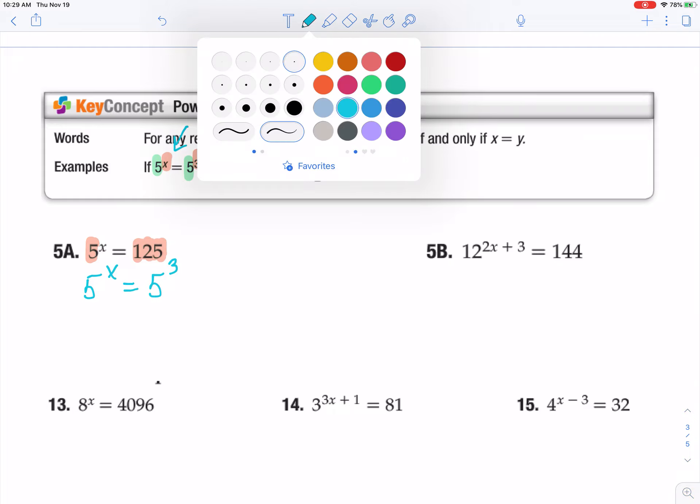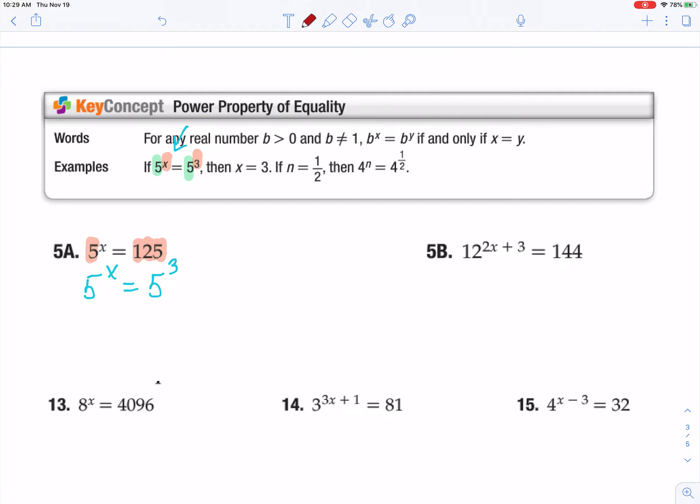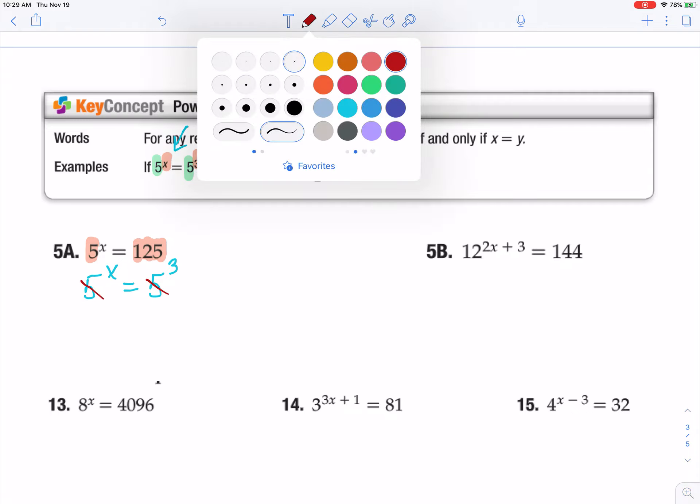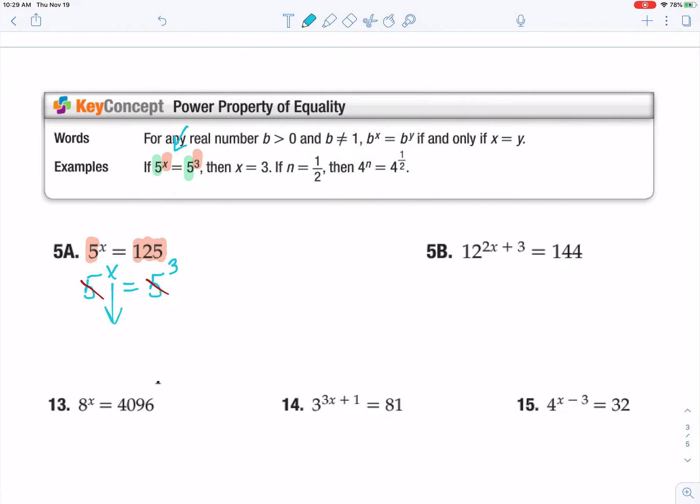And then again, if you want, you can kind of think about your bases canceling a little bit. And what you're going to end up with is just the exponents, and you're going to solve from there. Which in this case, it's actually solved. So x equals 3.